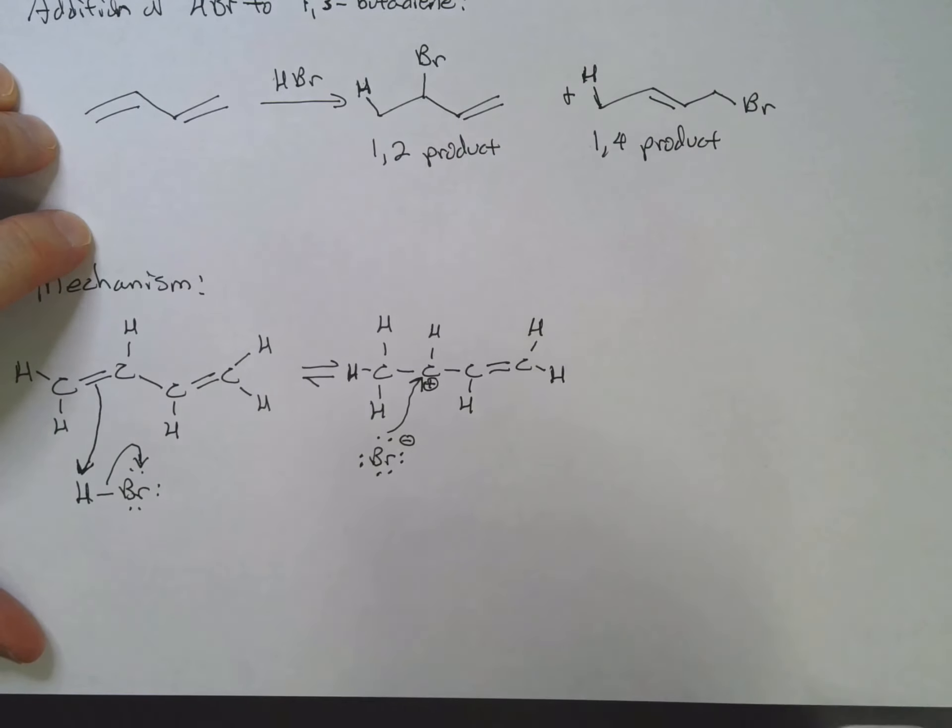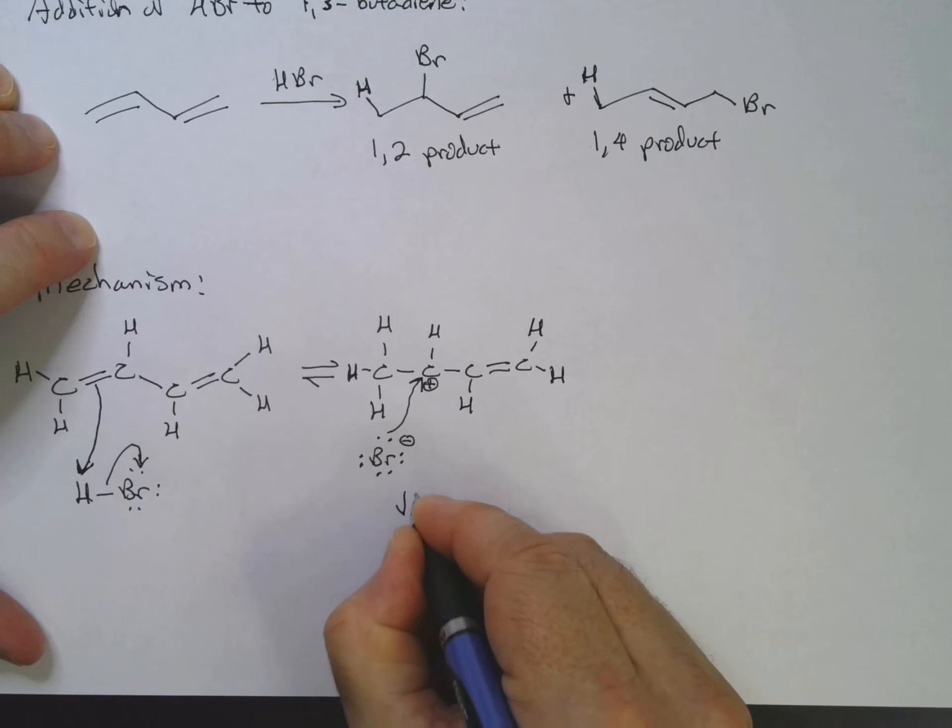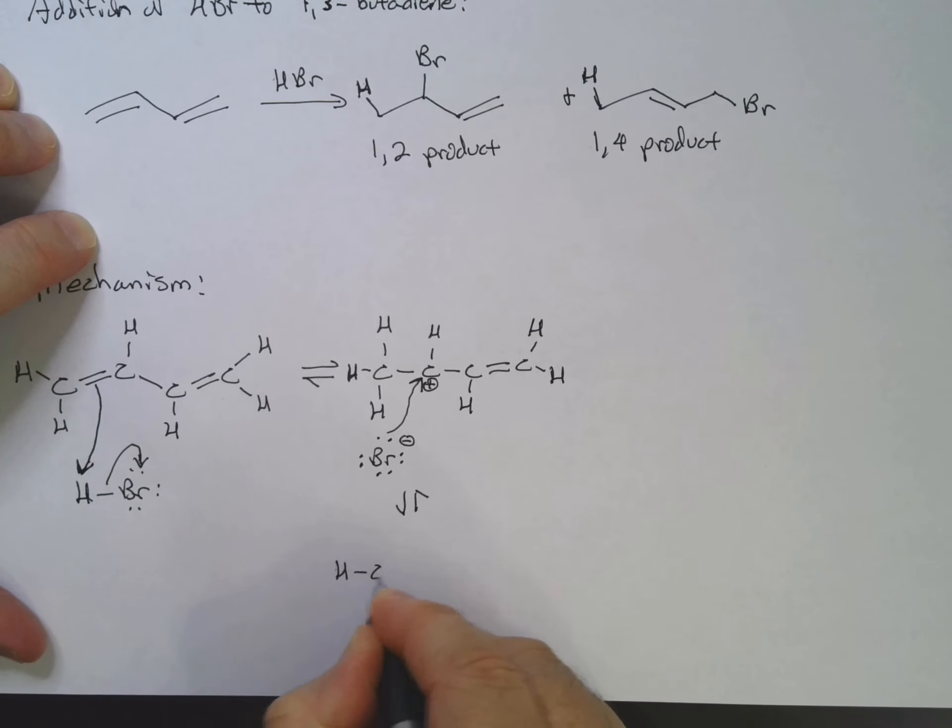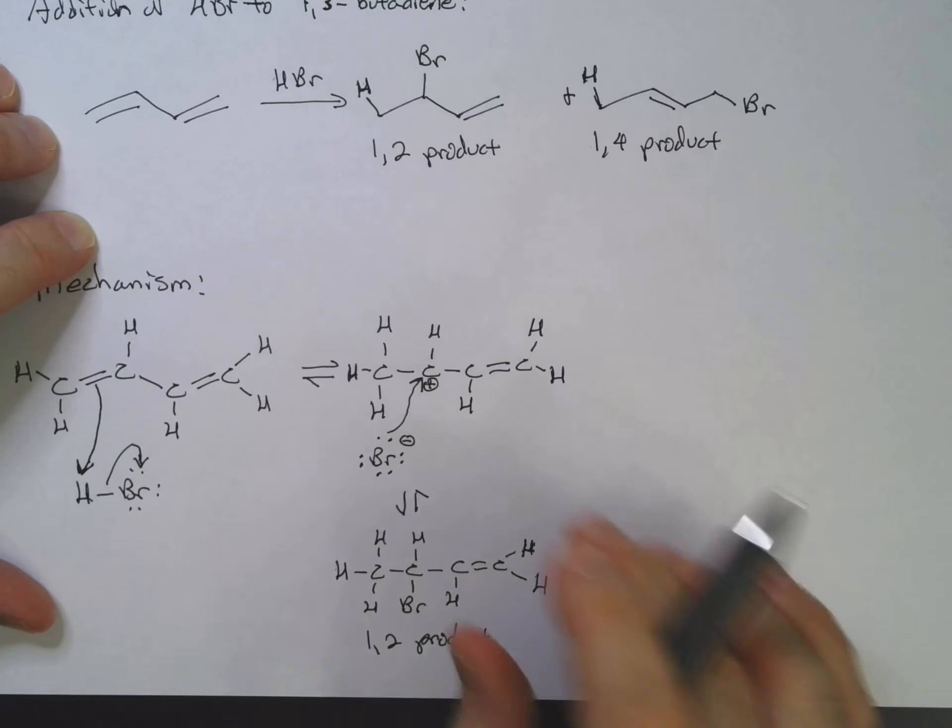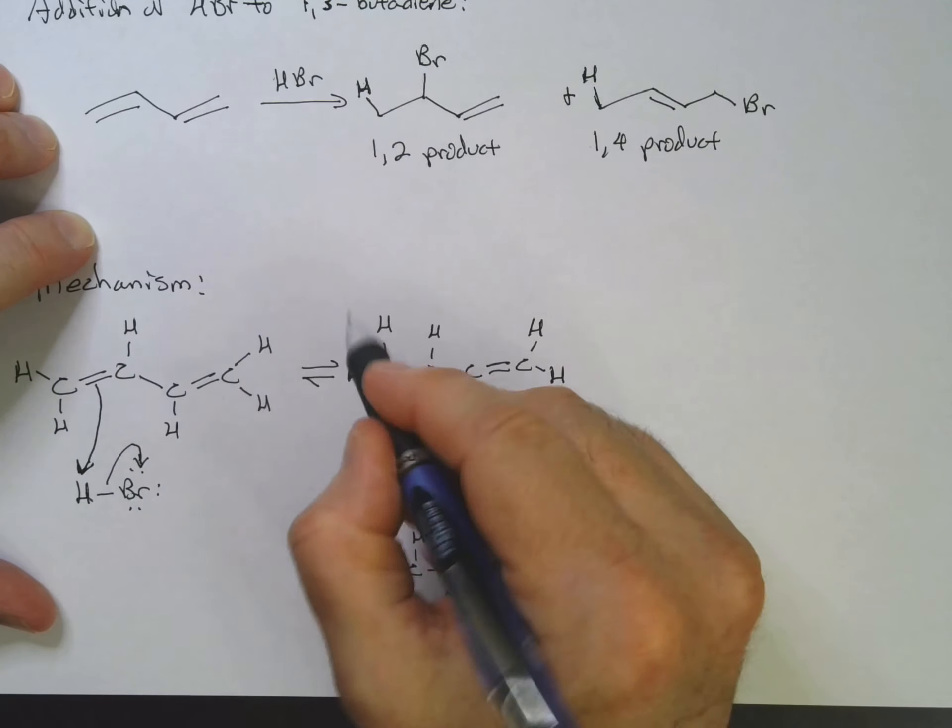So that could go ahead and simply add in there, and that would give us now our 1,2 product. But how do we get the 1,4? We have to add something over here. Well, one thing to remember is that this is an allylic carbocation.